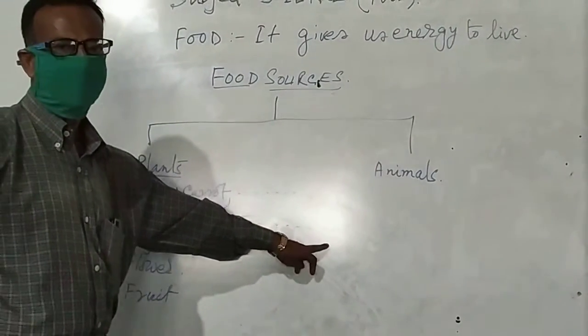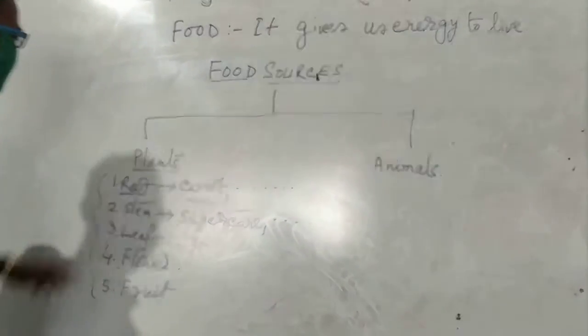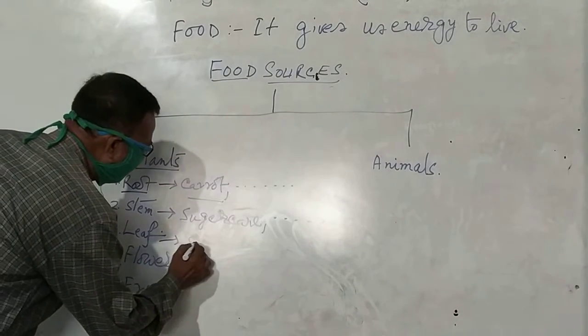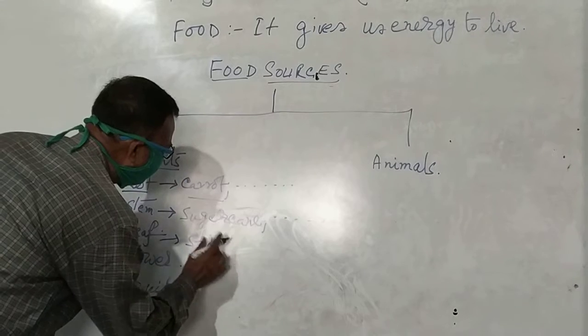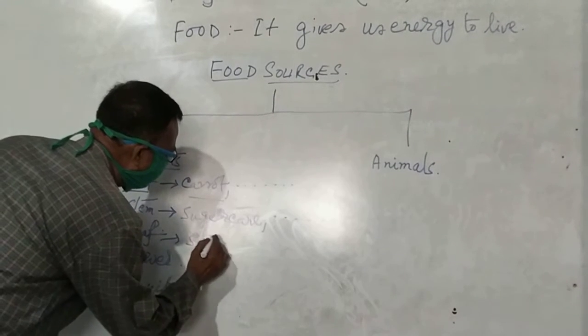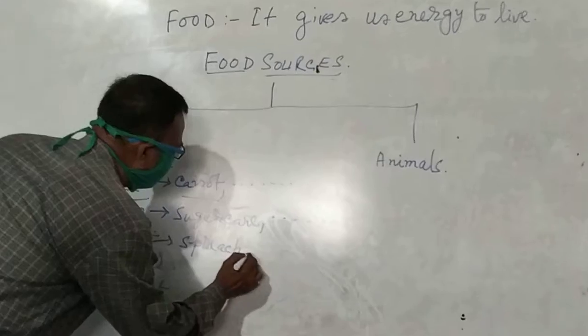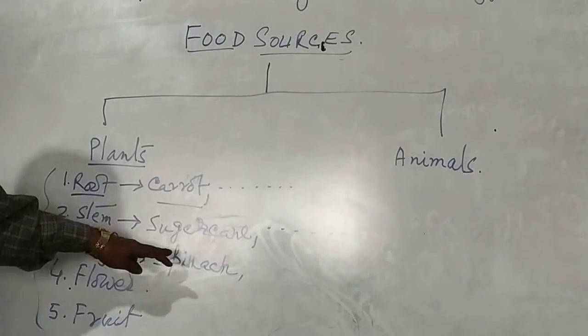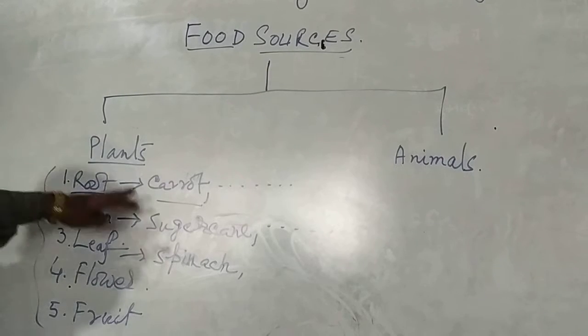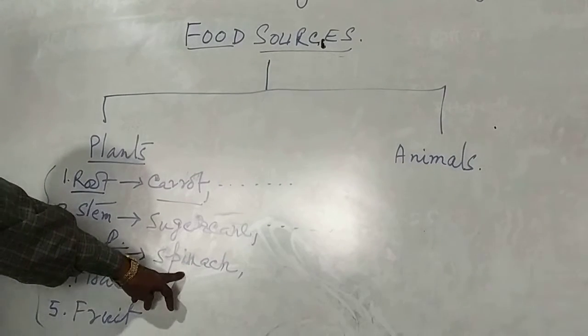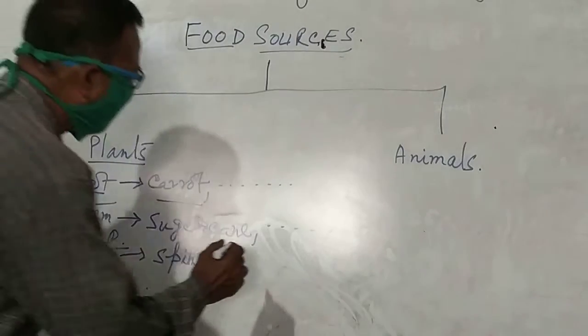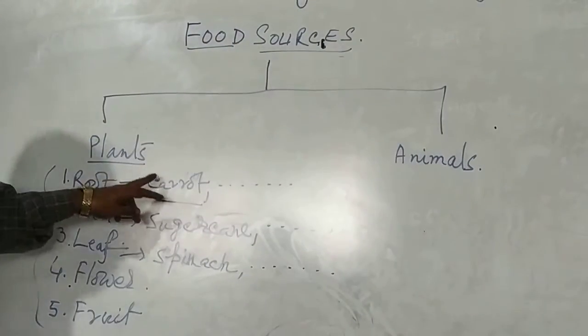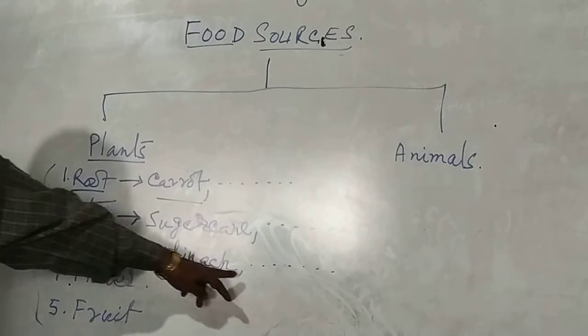And other parts of the plant. Another part of stem from plants we take as a food, that will be filled by you in your copy. Similarly, leaf, spinach. Spinach as the leaf part of plants, taken as our food. But another leafs are written by you.